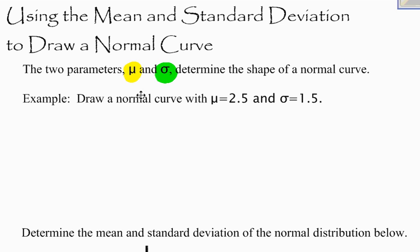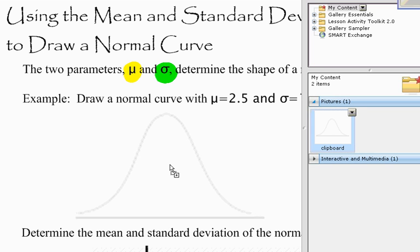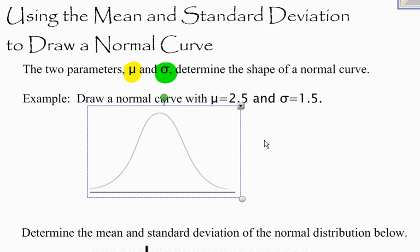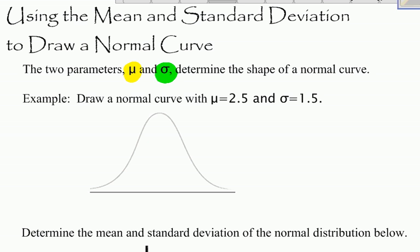So here, I want to draw a normal curve with mu, the mean 2.5, and the standard deviation sigma at 1.5. Well, I've already got a normal curve or a bell-shaped curve here I can just pull in, and I'm going to label some things. We know that at the center of a bell-shaped curve, the center of this distribution, is the mean. So the mean right here, I'm going to label as 2.5.